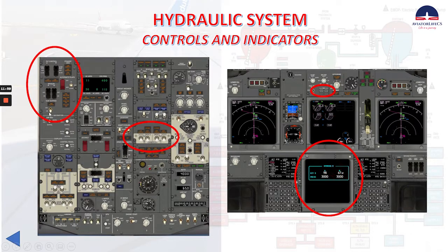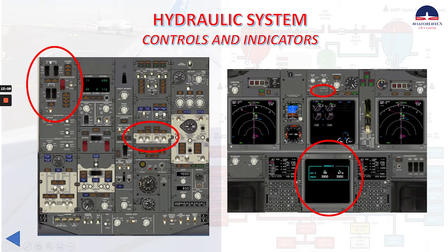Now if we talk about the yaw damper light — it's an amber light and indicates that the yaw damper system is not engaged. The switch has two positions: off and on. In off, this engages the yaw damper. On engages the main yaw damper to the main rudder power control unit. If the B flight control switch is in the on position, it engages the standby yaw damper to the standby rudder power control unit. If both A and B flight control switches are in the standby position, the yaw damper system consists of a main and standby yaw damper. Yaw damper operation does not result in rudder pedal movement.